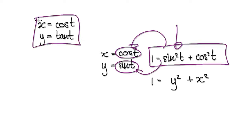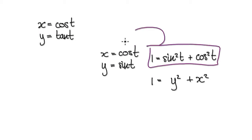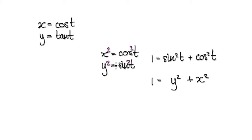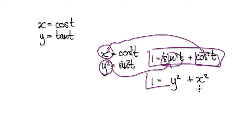So when you come to turn these into its Cartesian form, look for something that connects x and y. Looking at this scenario here, it is this identity that connects both x and y. Looking at x, if you square both sides, that will then give you x squared. Now looking at y, square both sides, that will then give you y squared. So now you can substitute these in, and make use of the identity to come up with the Cartesian equation.